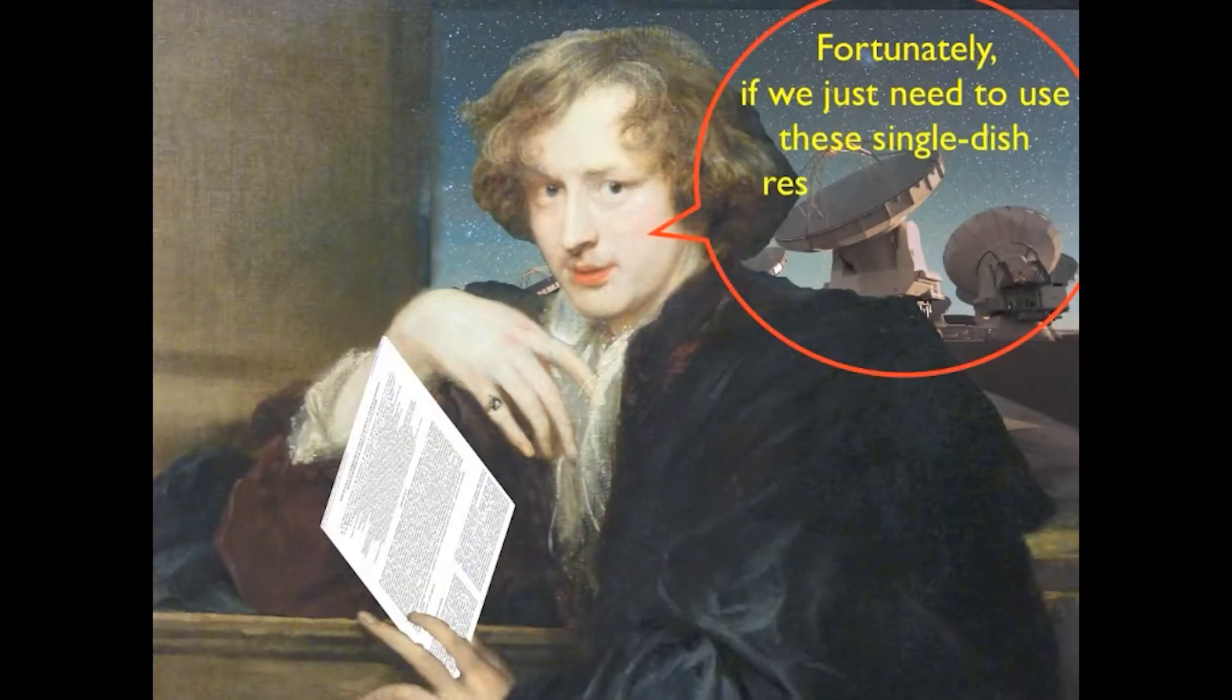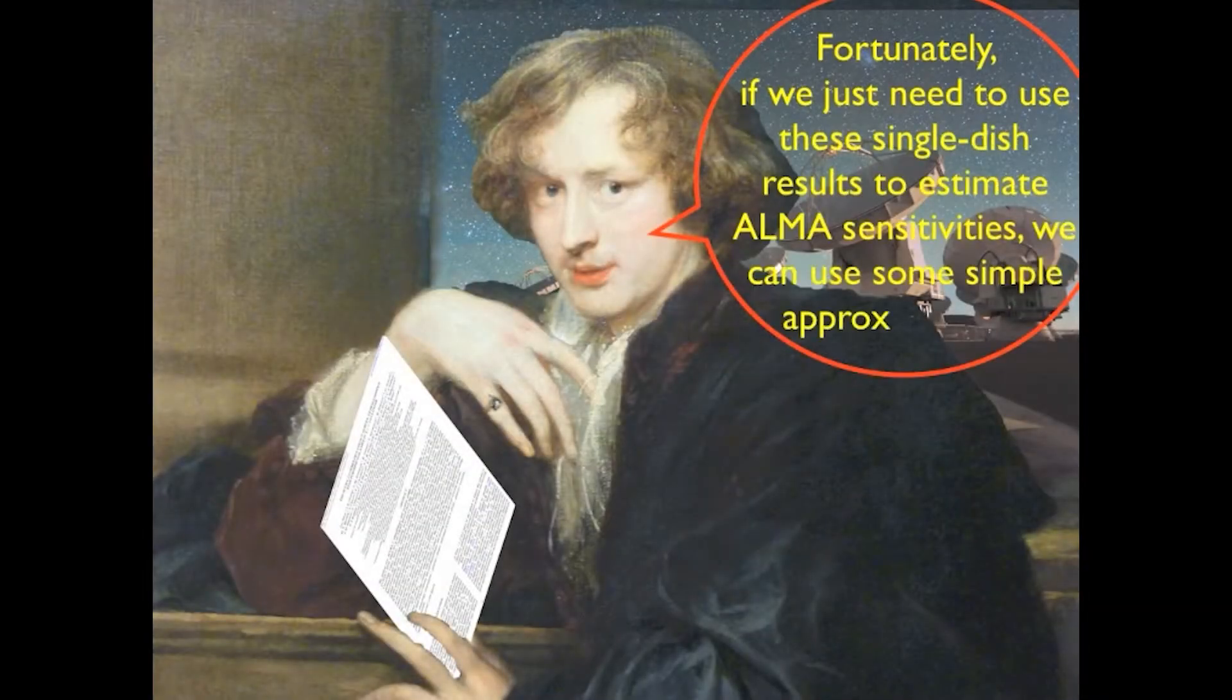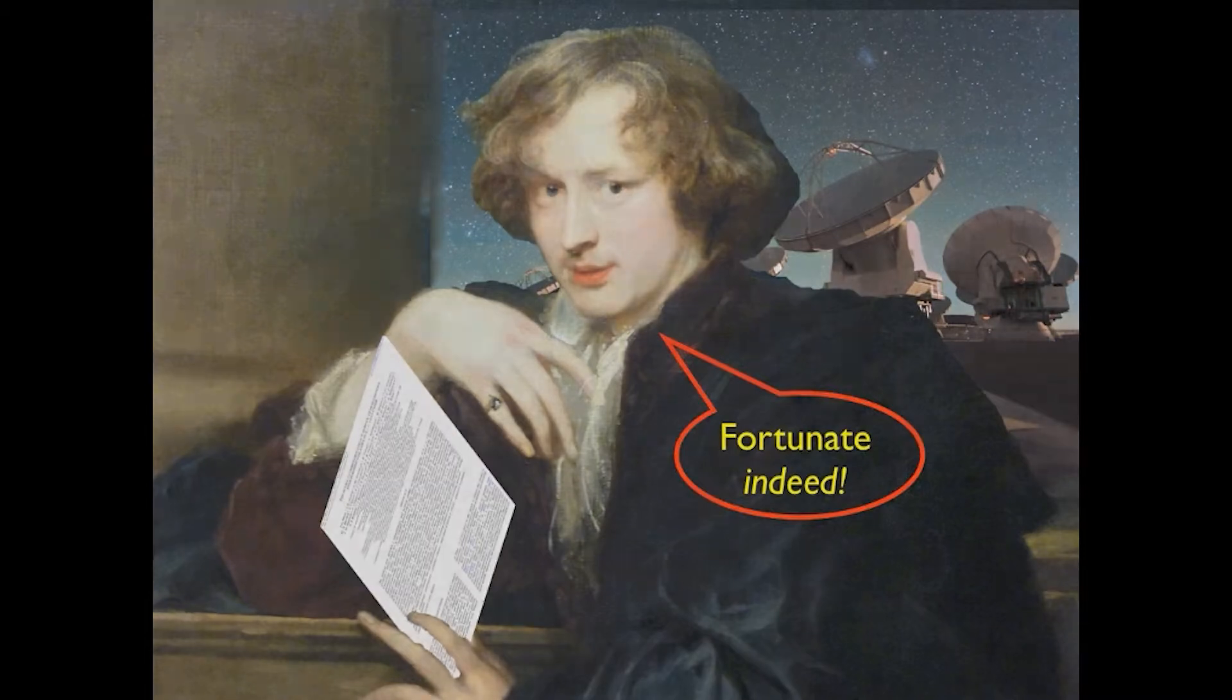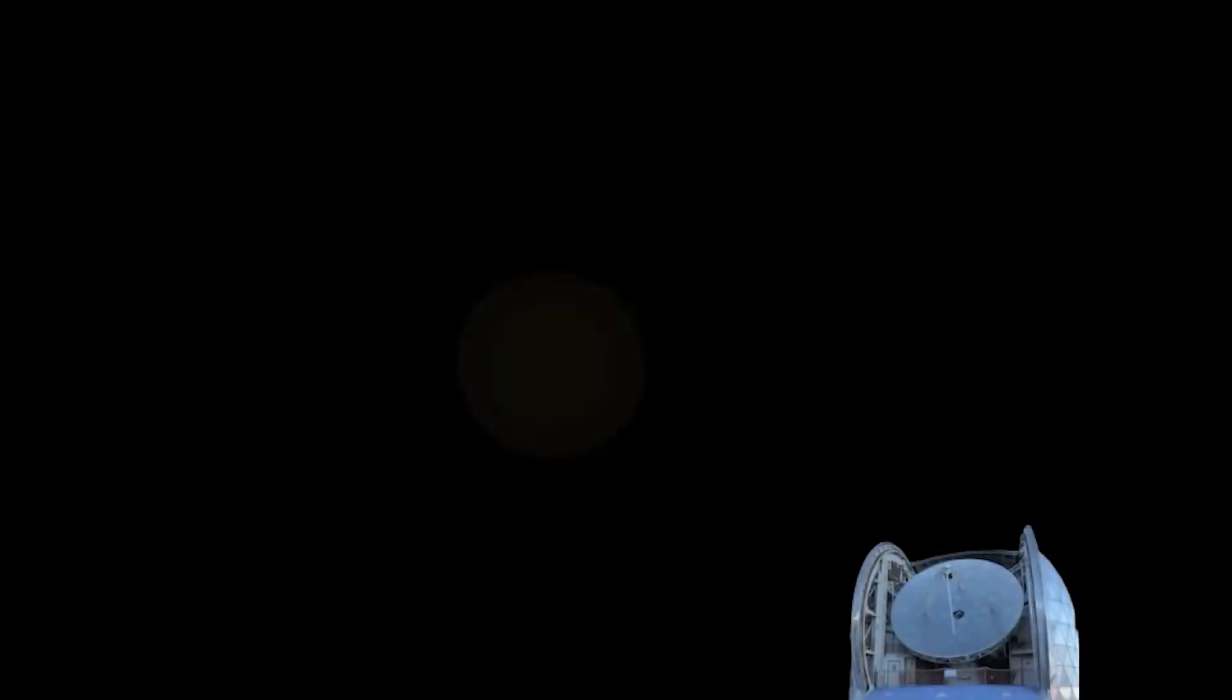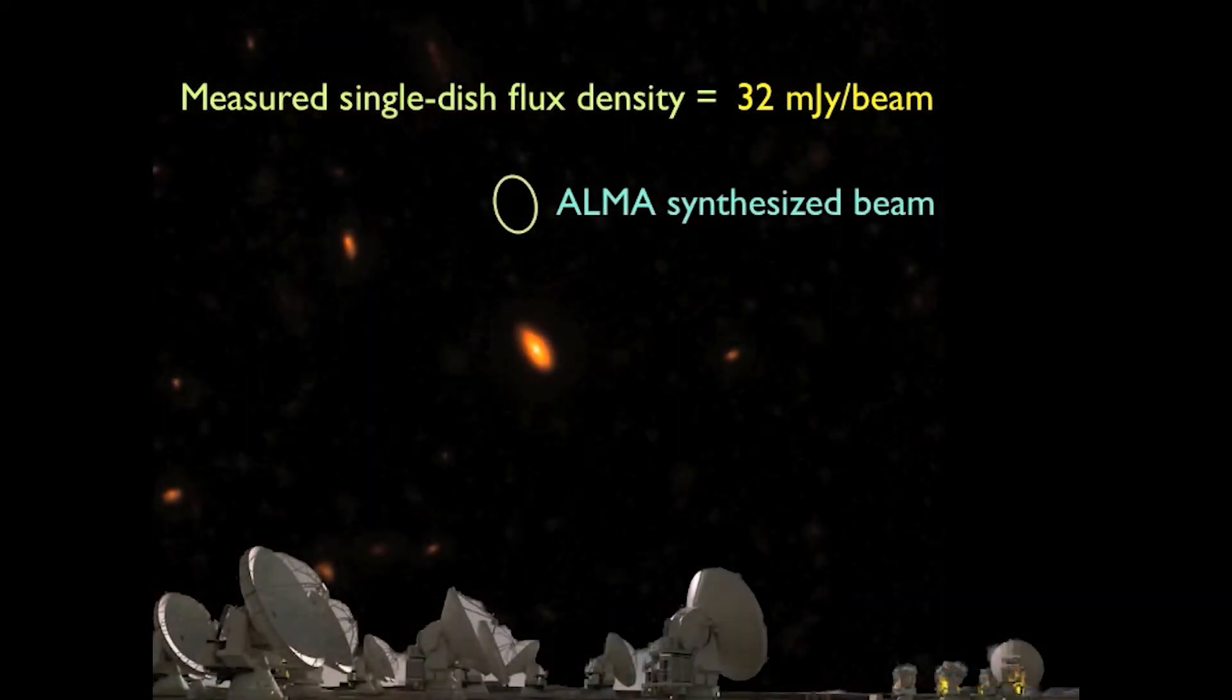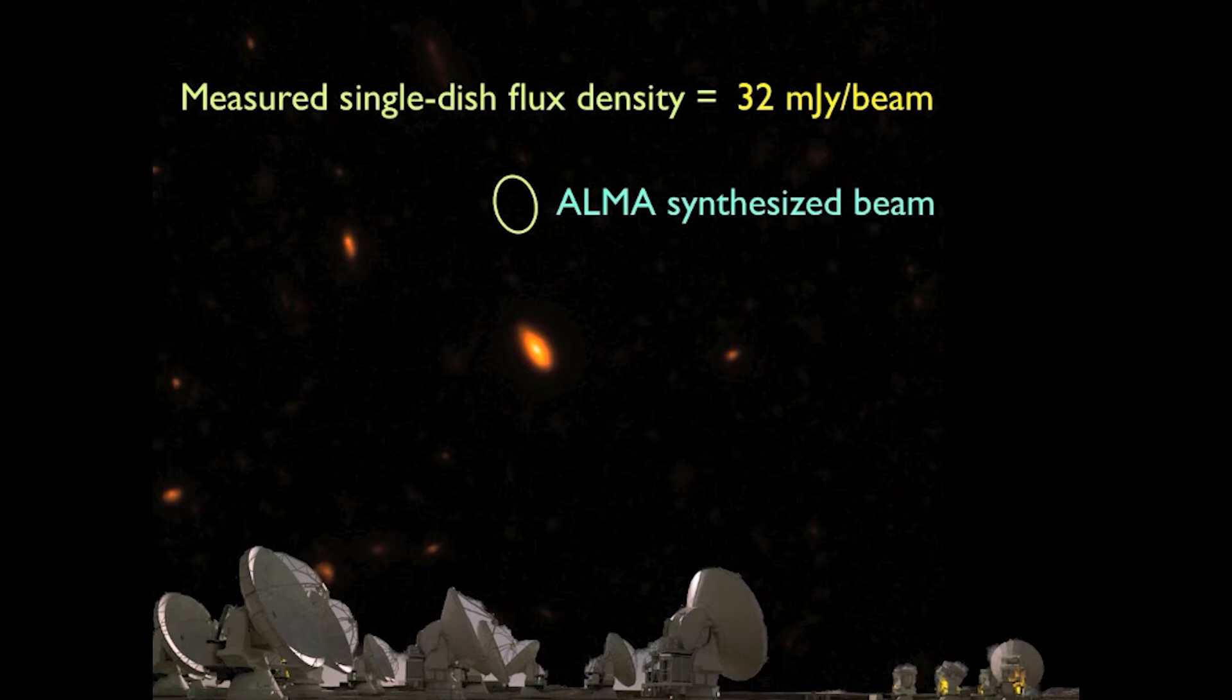Fortunately, if we just need to use these single-dish results to estimate ALMA sensitivities, we can use some simple approximations. Suppose your single-dish observation was presented in Janskys per beam, which is the flux density of the source measured within the telescope's beam. To estimate the flux density within ALMA's usually much smaller beam, you'll need an estimate of the angular size of the source.